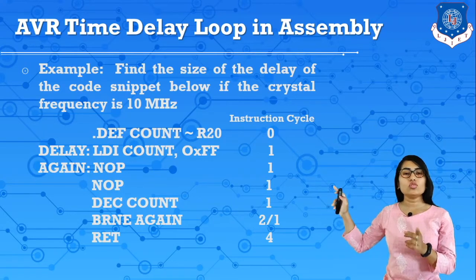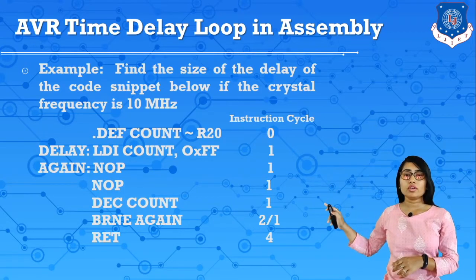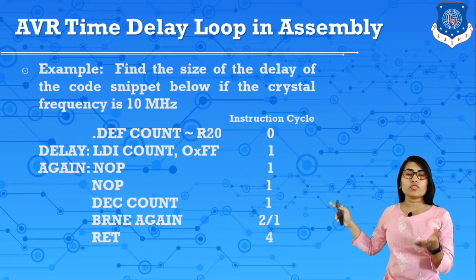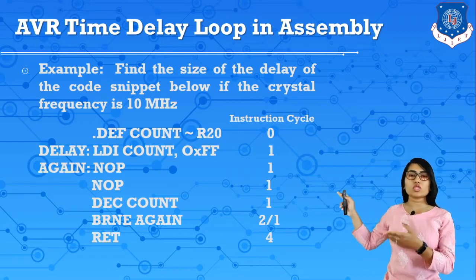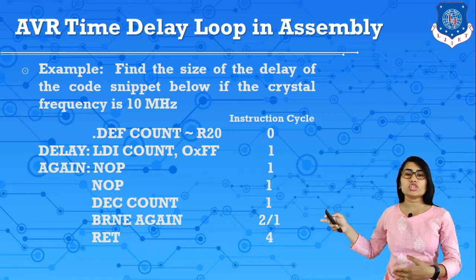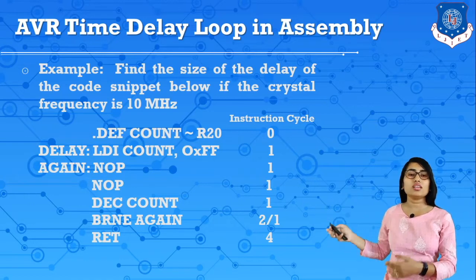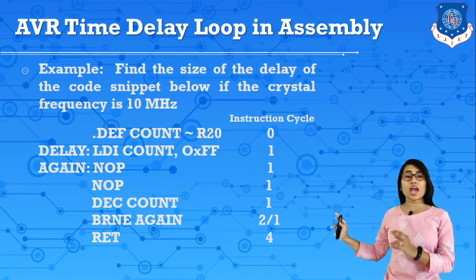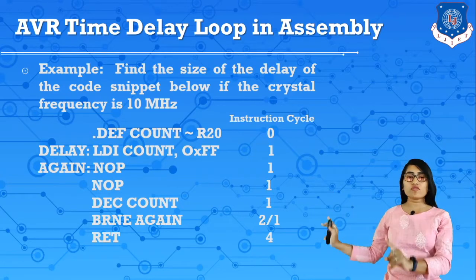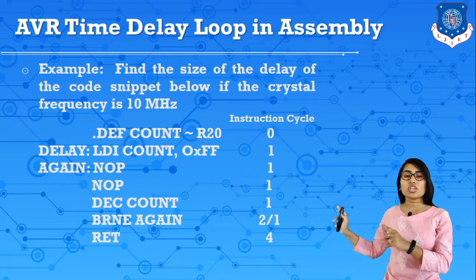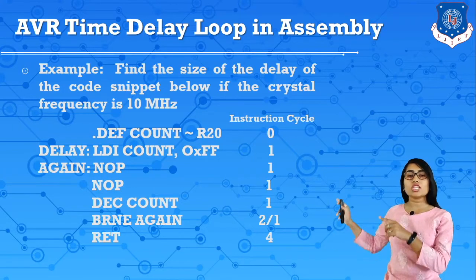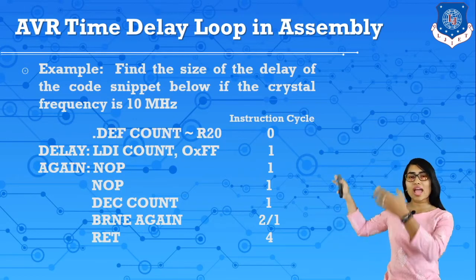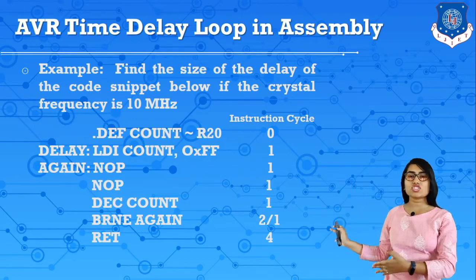Then 'LDI count, 0xFF' — which is basically 255 — requires 1 machine cycle. Then three NOP (no operation) instructions, each requiring 1 machine cycle. For decrement, 1 machine cycle. Now 'BRNE again': if the condition is satisfied it requires 2 machine cycles; otherwise it requires 1. Then RET. This is the program with its instruction cycles.